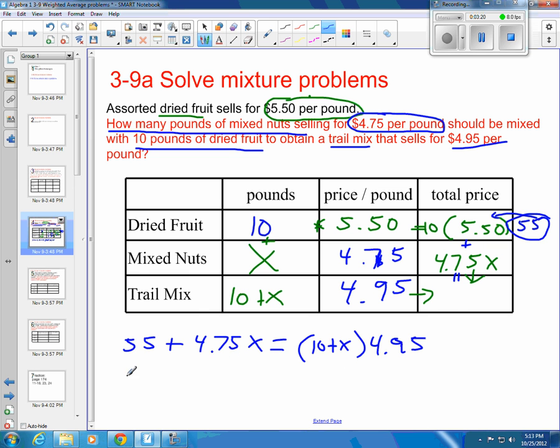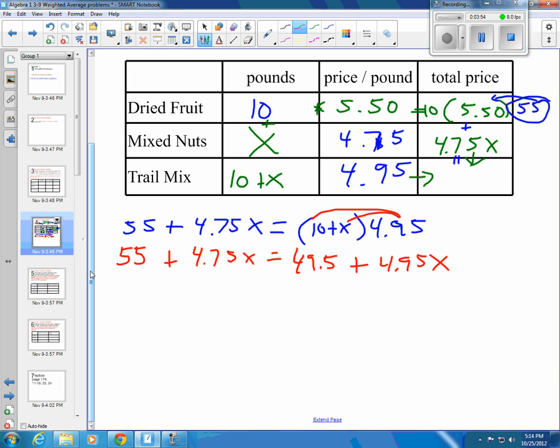Let me go through and get my distributive property here so I can get to my variable. This is 55 plus 4.75X is equal to, well, 10 times 4.95. When you multiply by 10, you're moving the decimal one place, so that's 49.5. I sure hope you didn't grab your calculator for that. And then this is going to be 4.95X.